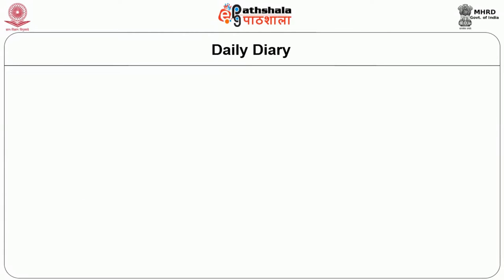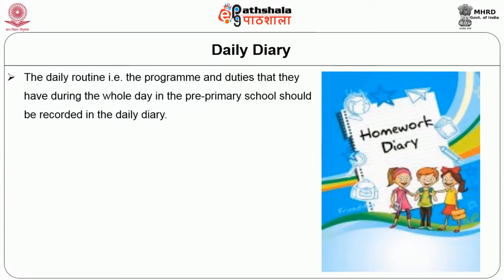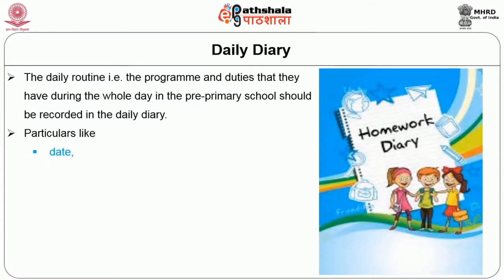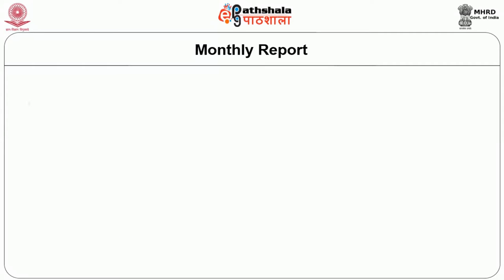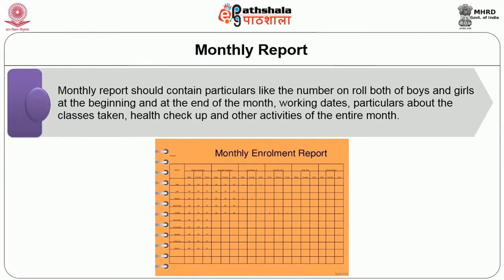The daily diary is used to write progress particulars such as the date, starting of the school, attendance of children, prayer, free conversation, planned activity, outdoor play, song, indoor play and visit of guests — all should be clearly noted regularly. The monthly report should contain particulars such as classes taken, health checkup and other activities of the entire month. The yearly planning report contains extracurricular activities for each month.